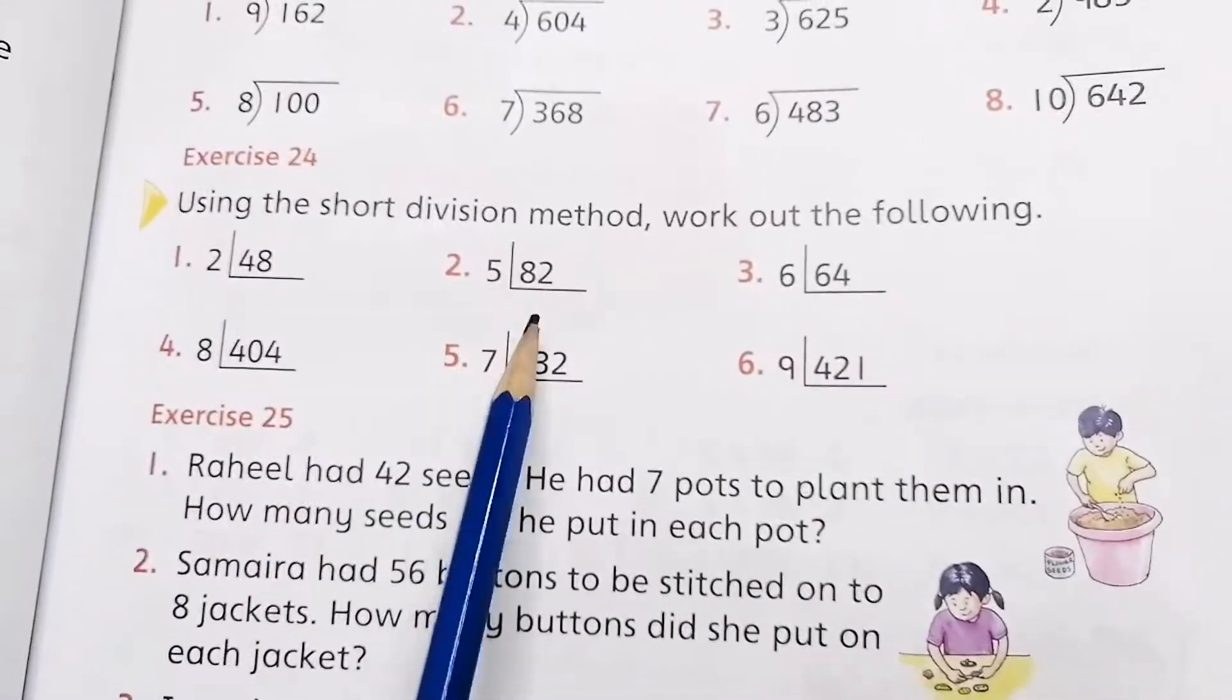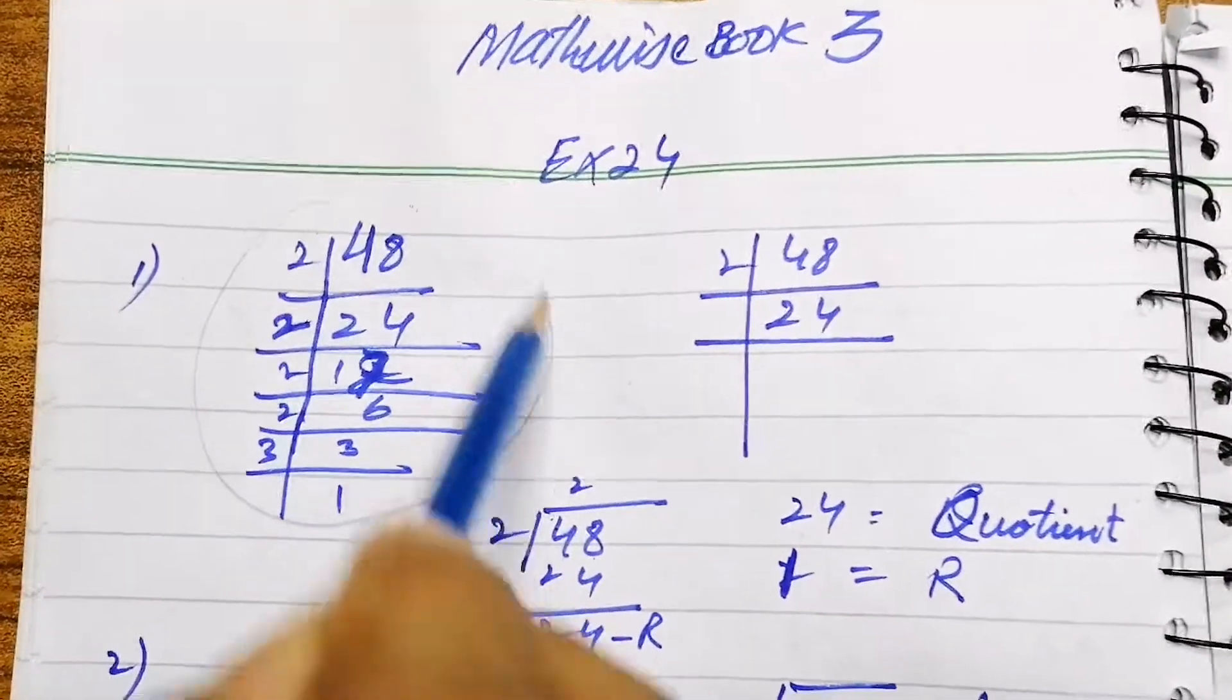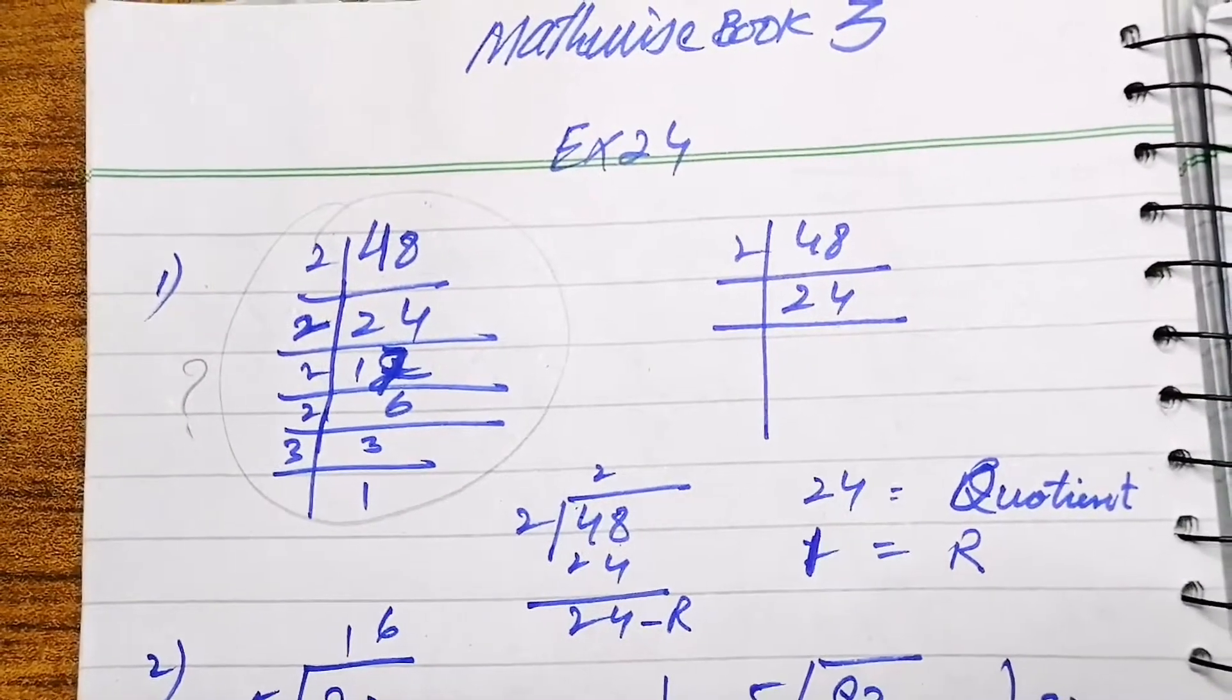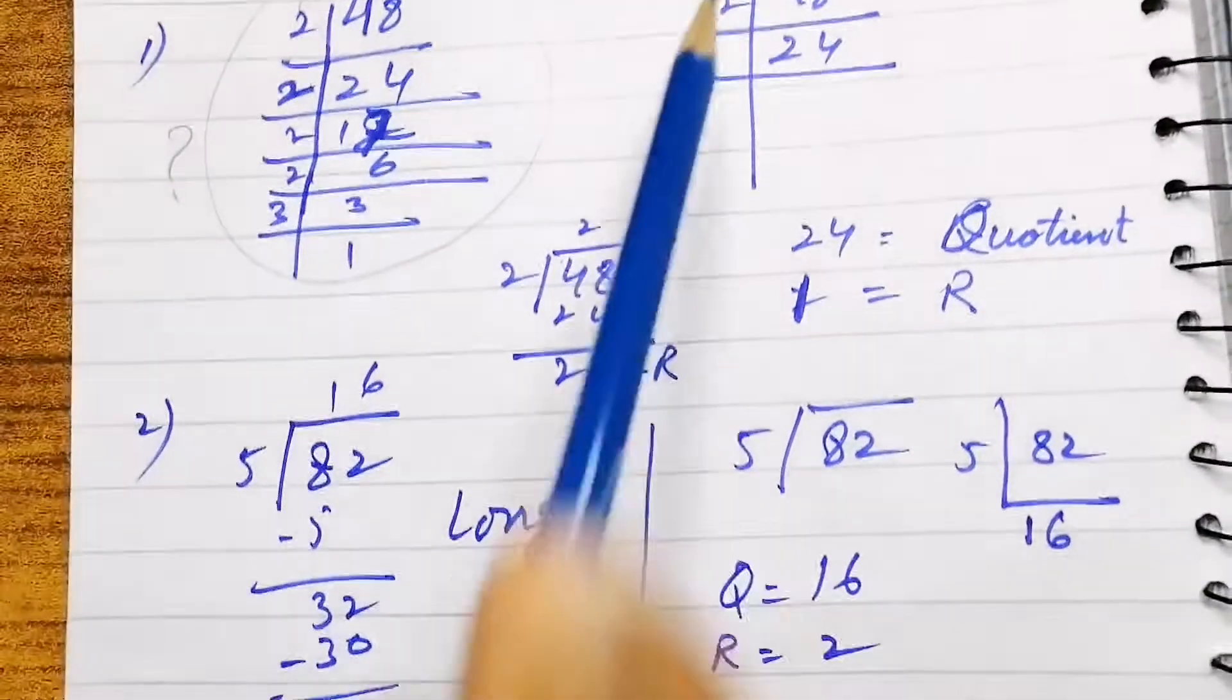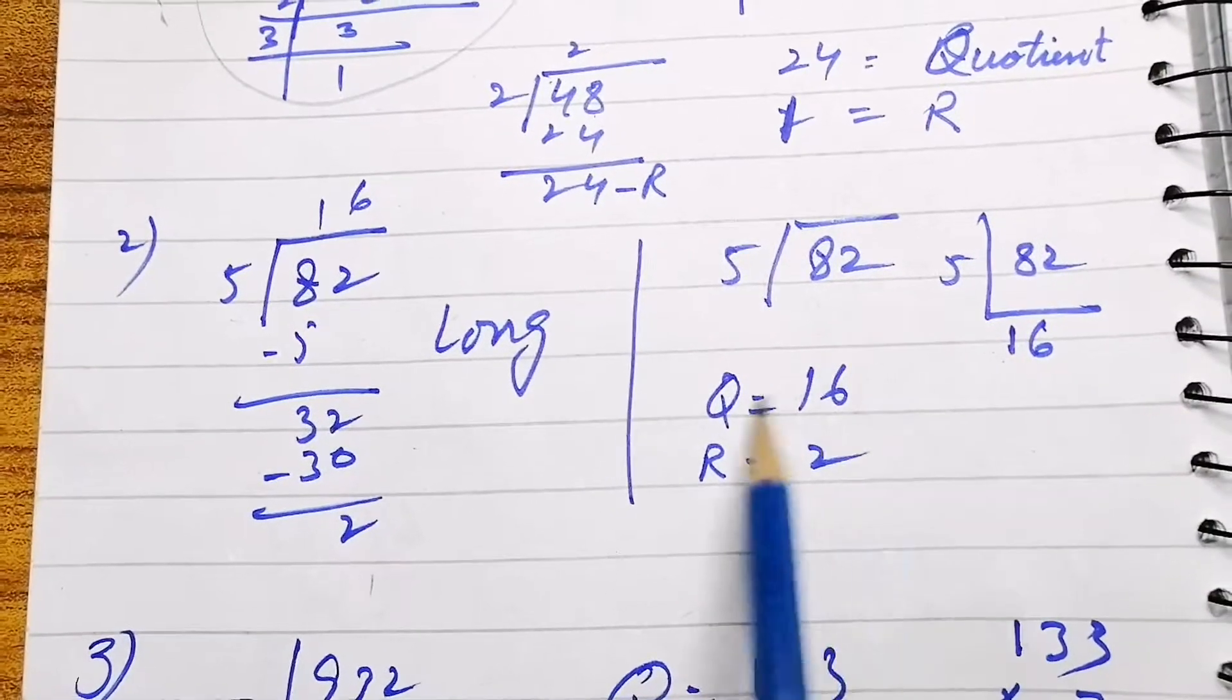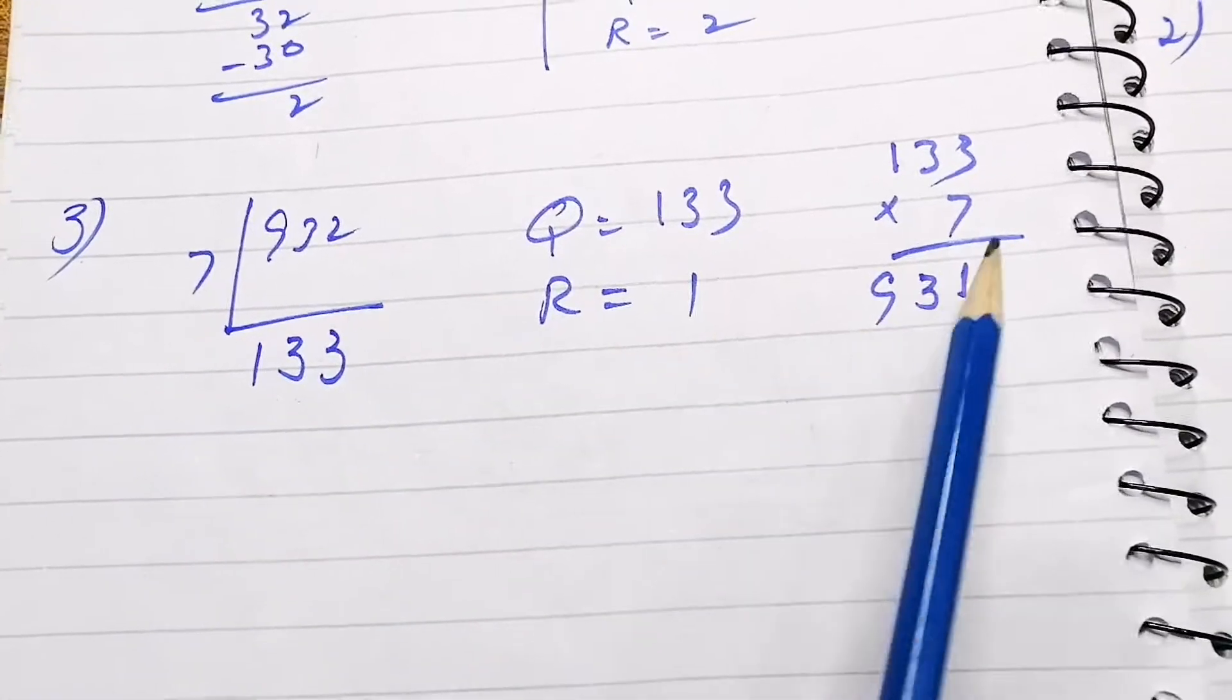Exercise 24 is by short division method only with a decimal number once you have to divide. This is a kind of factorization I have done. Here 48 divided by 2, only once you have to divide. 2 24s are 48, so 24 is quotient and 1 is remainder here, 2 is divisor. Similarly 582 divided by 5. This is long division method. 16 is quotient and 2 is remainder. 932 divided by 7, so 133 is the quotient and 1 is remainder.